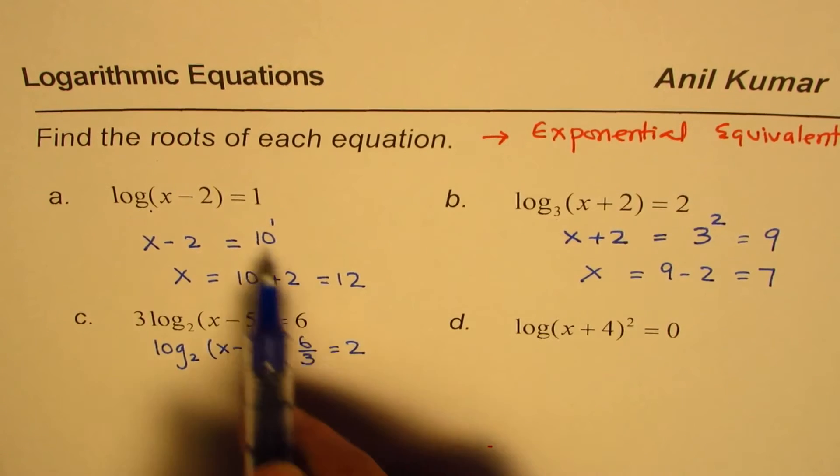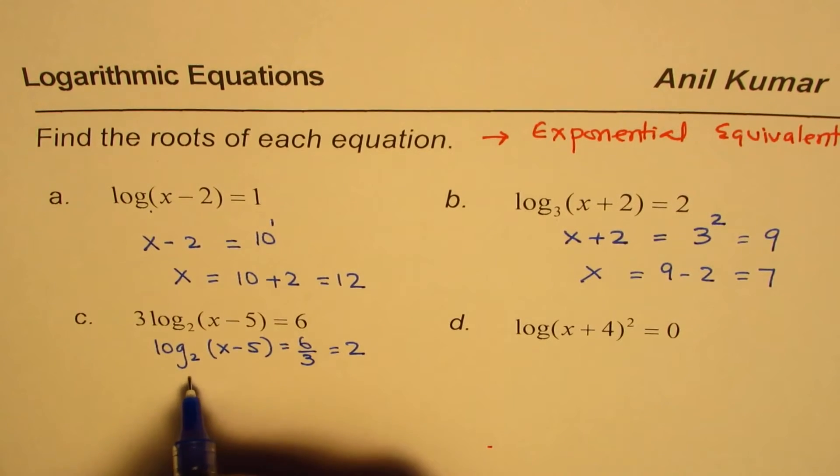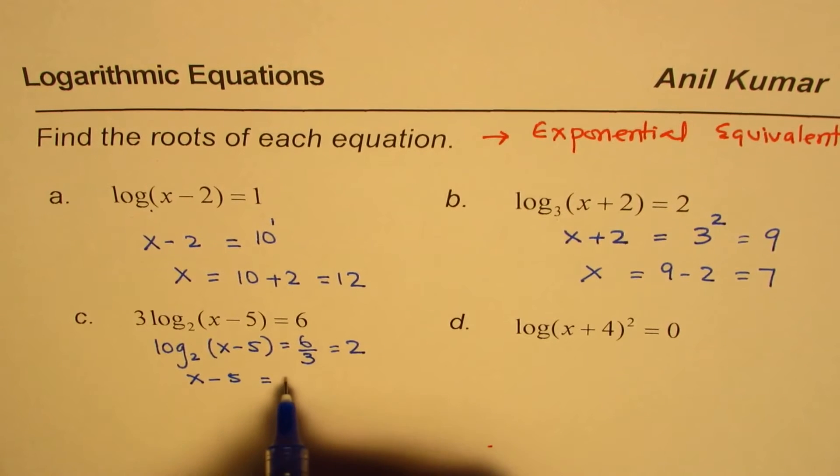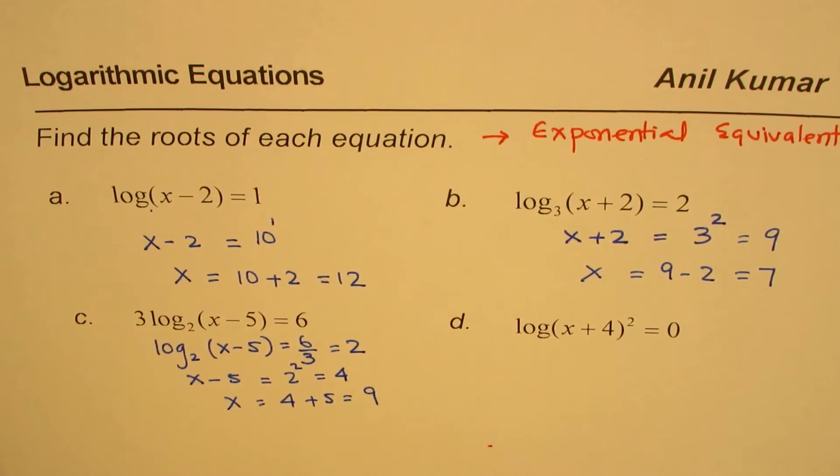Now we'll write with exponents. So we have x minus 5 equals 2 squared, which is 4. And x equals 4 plus 5, which is 9.